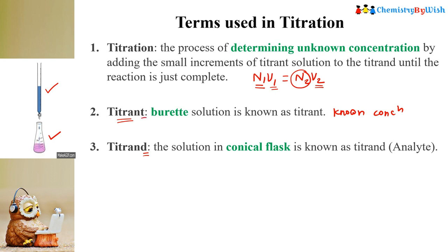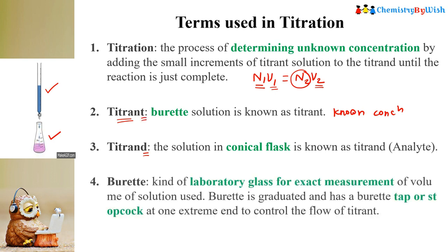So the solution in the burette we call the titrant, and the solution in the conical flask we call the titrand. The burette is a hollow glass apparatus which contains a stopcock at one end which controls the flow of the titrant. So burette is a glass apparatus which has a stopcock at one end that controls the flow of the titrant. This is called a burette.